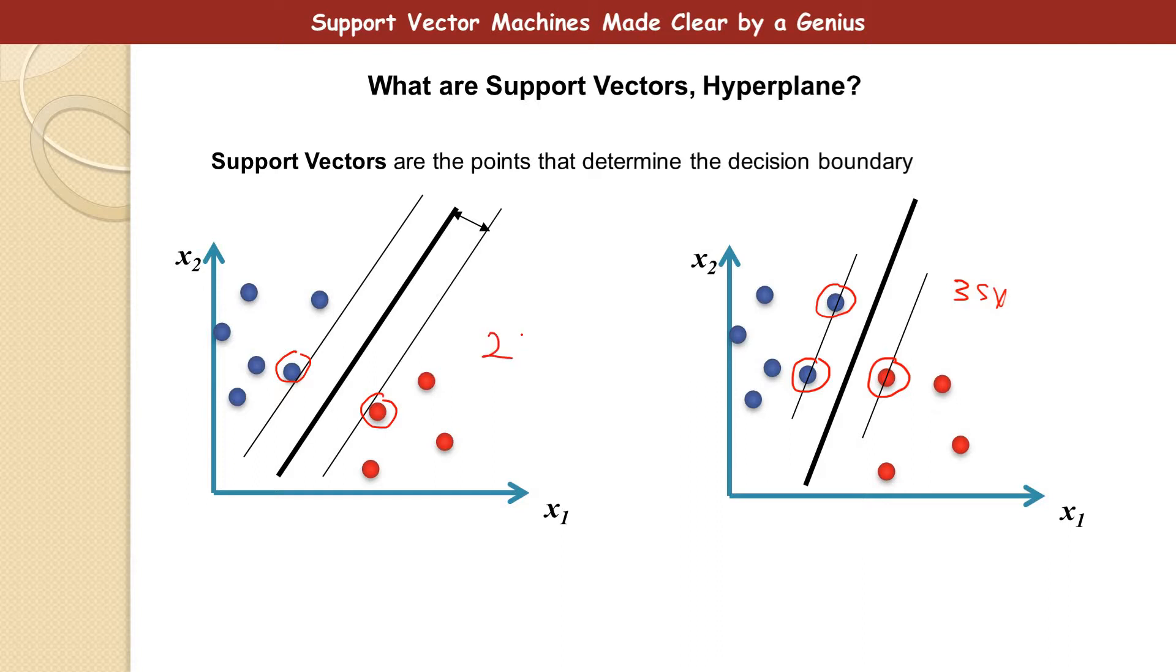and we have 2 Support Vectors here. And we have the lines parallel to the decision boundary. This is the decision boundary.